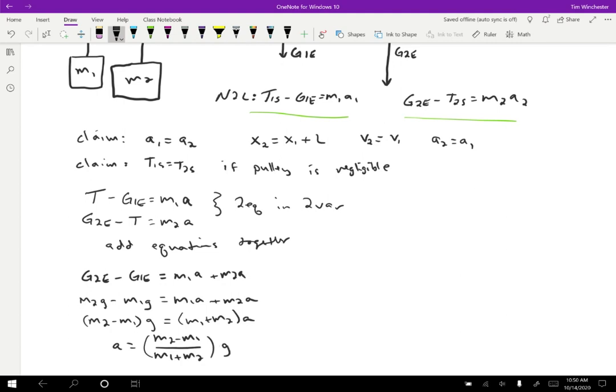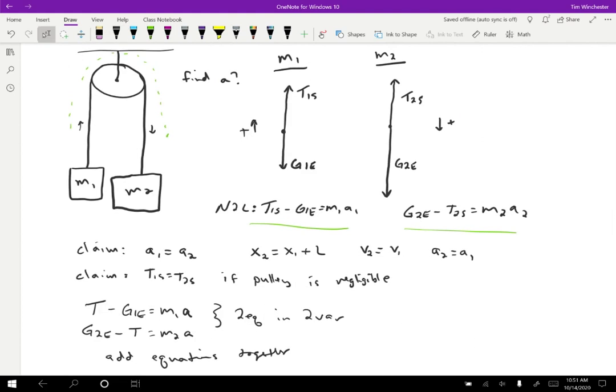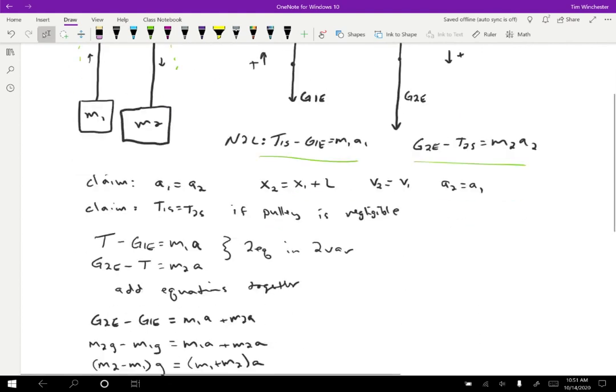If I know the two masses, I can figure out exactly what the acceleration is going to be. One good thing to do to check that you have the correct answer is plug in some simple cases. What happens if the two masses are the same? If M1 and M2 are the same, looking at the picture I expect them not to move because they will be balanced. M2 minus M1 is zero so I'll get an acceleration of zero. That makes sense.